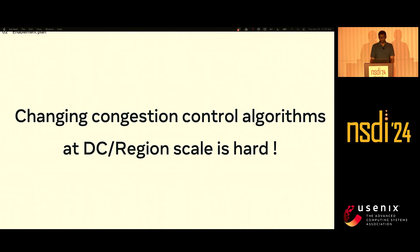Talking about enablement — enabling a congestion control should be straightforward, right? Especially DCTCP. The ingredients were already there: almost every switch in our network supports ECN, and the Linux kernel provides multiple interfaces to change the congestion control algorithm. But our experience showed that both these steps were much more involved than we had hoped for, and the rest of the talk will dive into these nuances.